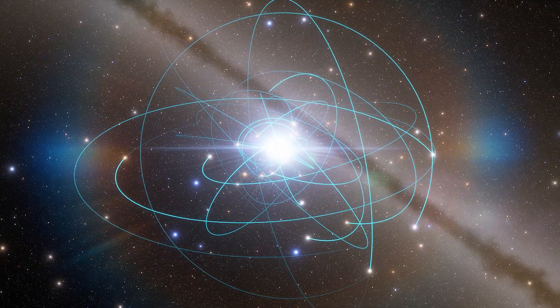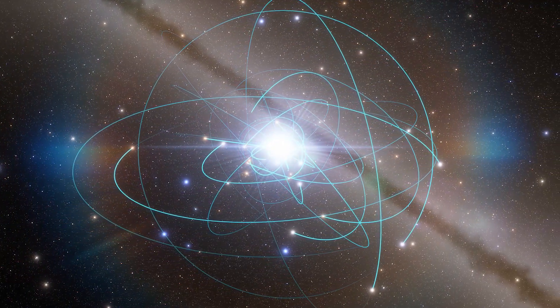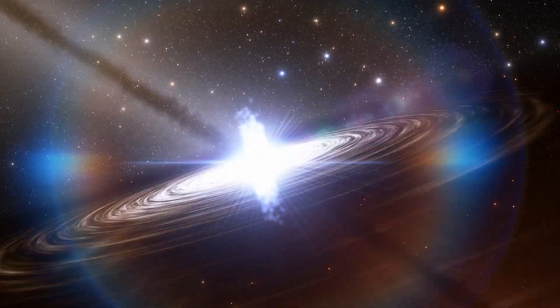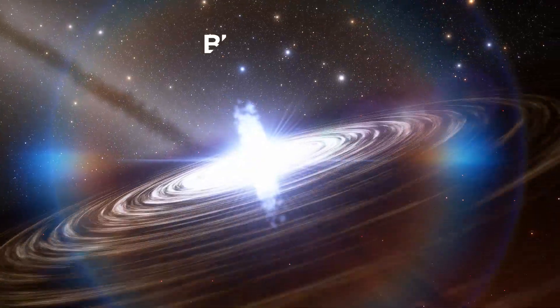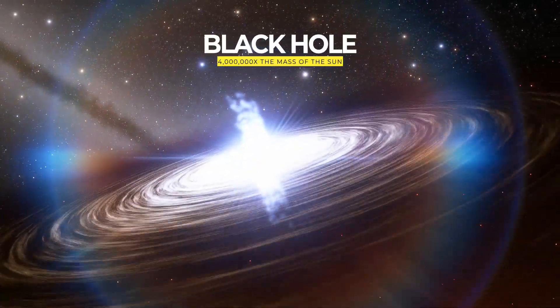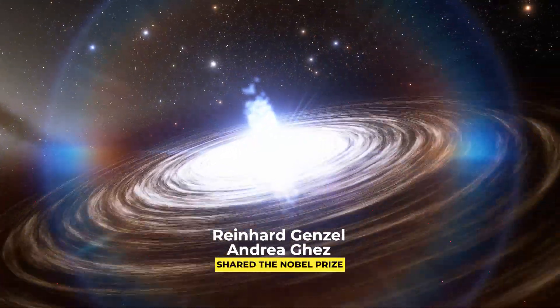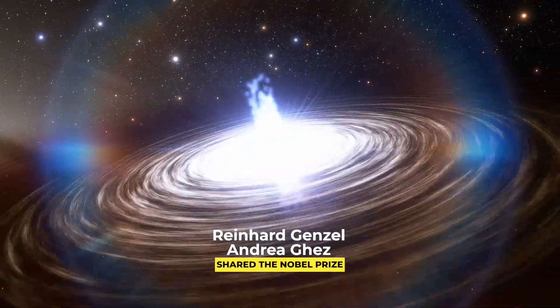They saw stars whirling around a dark object at speeds up to a third of the speed of light. Their motions suggested that at the center of the Milky Way was a black hole four million times the mass of the Sun. Reinhard Genzel and Andrea Ghez later shared the Nobel Prize in physics for this discovery.